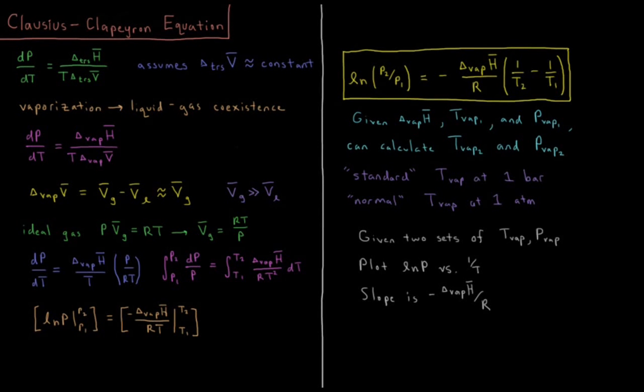This video will discuss the Clausius-Clapeyron Equation in Chemical Thermodynamics. We saw from the previous video for the Clapeyron Equation that if we have two phases in a coexistence curve, we have one degree of freedom.